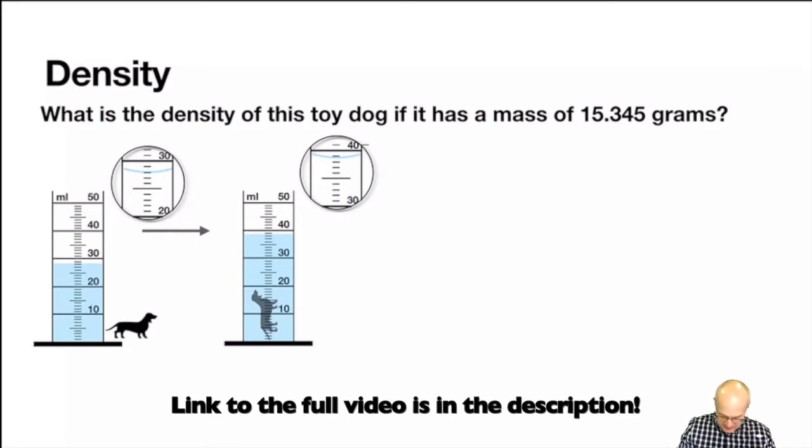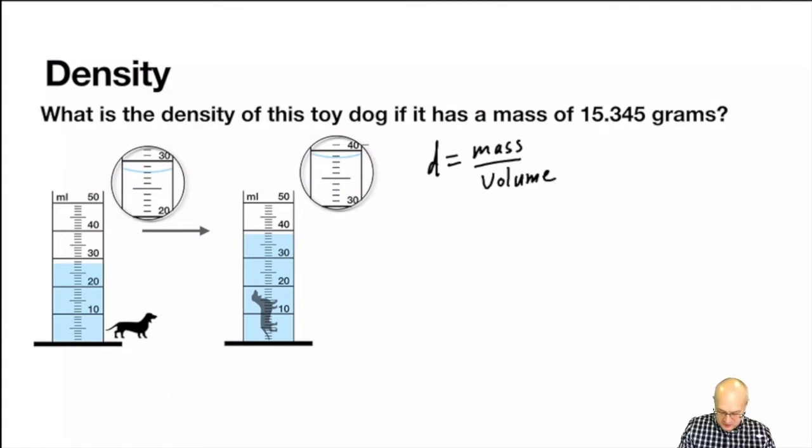So let's first remember that density equals mass over volume. Well, mass in this question is easy. It's written right here. Question is, what do we put down here for volume?